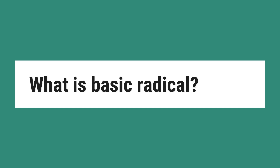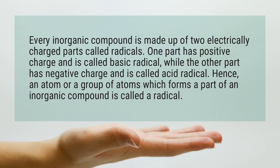What is basic radical? Every inorganic compound is made up of two electrically charged parts called radicals. One part has a positive charge and is called basic radical, while the other part has a negative charge and is called acid radical.